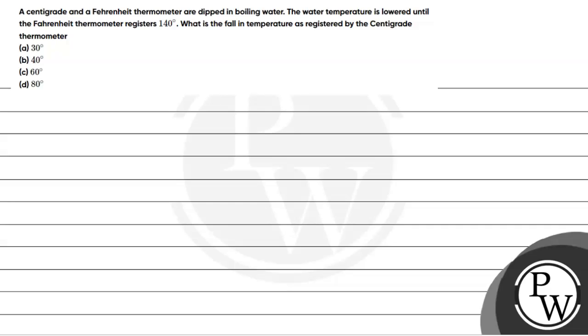Hello Bacho, let's see the question. A centigrade and Fahrenheit thermometer are dipped in boiling water. The water temperature is lowered until the Fahrenheit thermometer registers 140 degrees. What is the fall in temperature as registered by the centigrade thermometer?